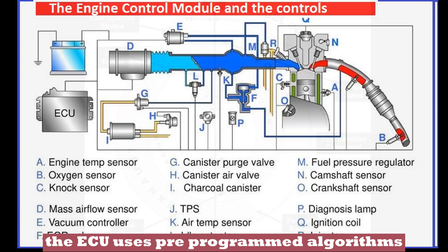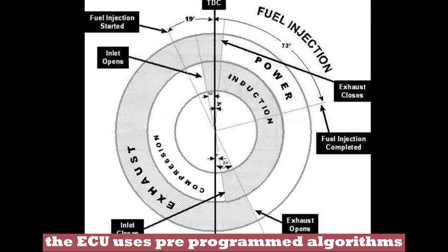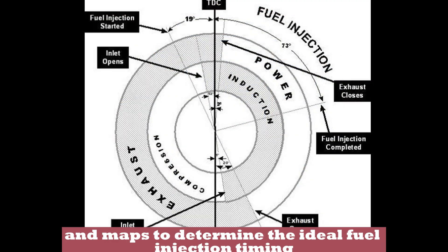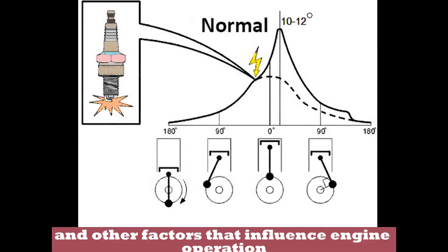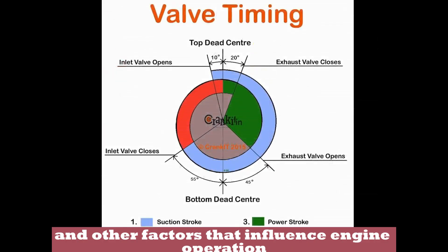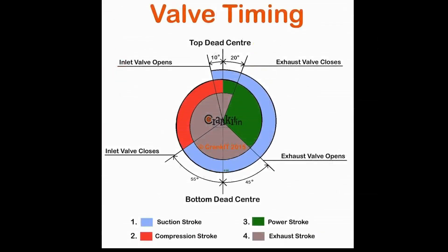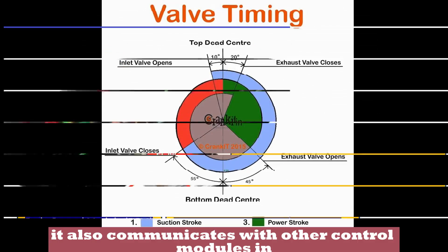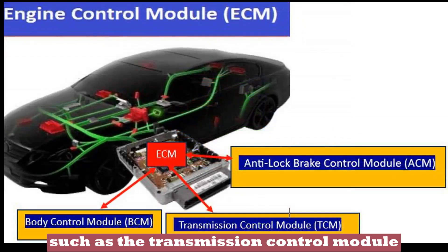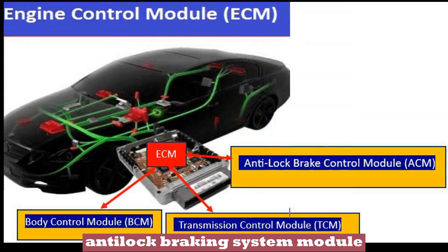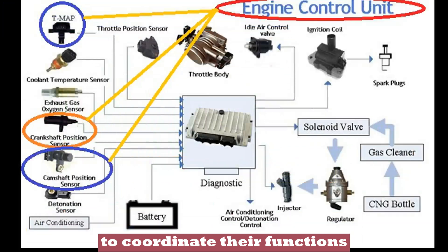The ECU uses pre-programmed algorithms and maps to determine the ideal fuel injection timing, spark timing, valve timing, and other factors that influence engine operation. It also communicates with other control modules in the vehicle, such as the transmission control module, anti-lock braking system module, and traction control module, to coordinate their functions.